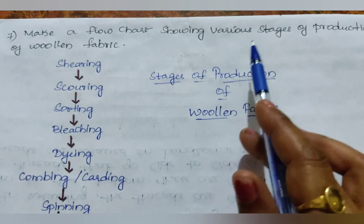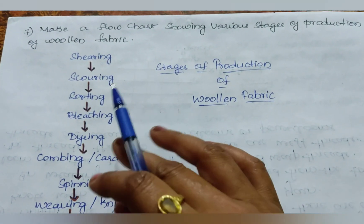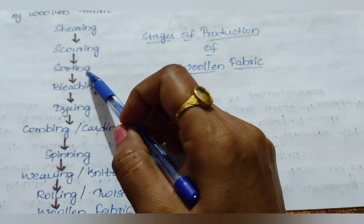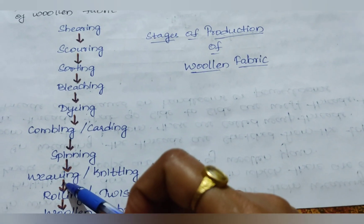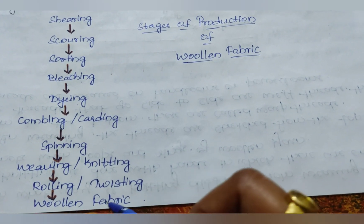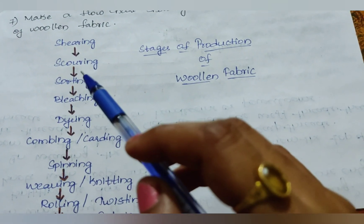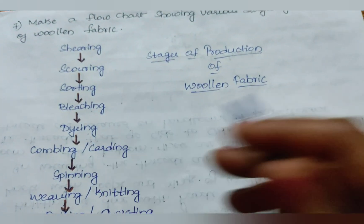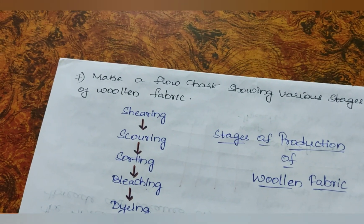Seventh question: Make a flow chart showing various stages of production of woolen fabric. The different stages are: Shearing, Scouring, Sorting, Bleaching, Dyeing, Combing or Carding, Spinning, Weaving, Knitting, Rolling or Twisting — and lastly we obtain the woolen fabric. These processes have already been explained in the Animal Fiber lesson. You can refer to it for the definitions.